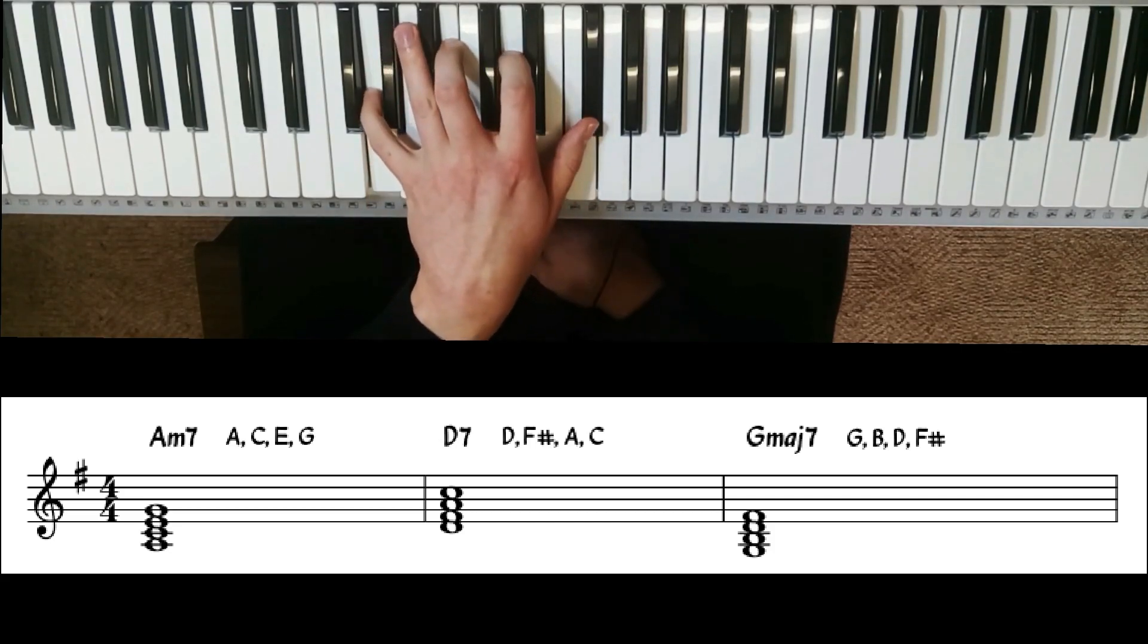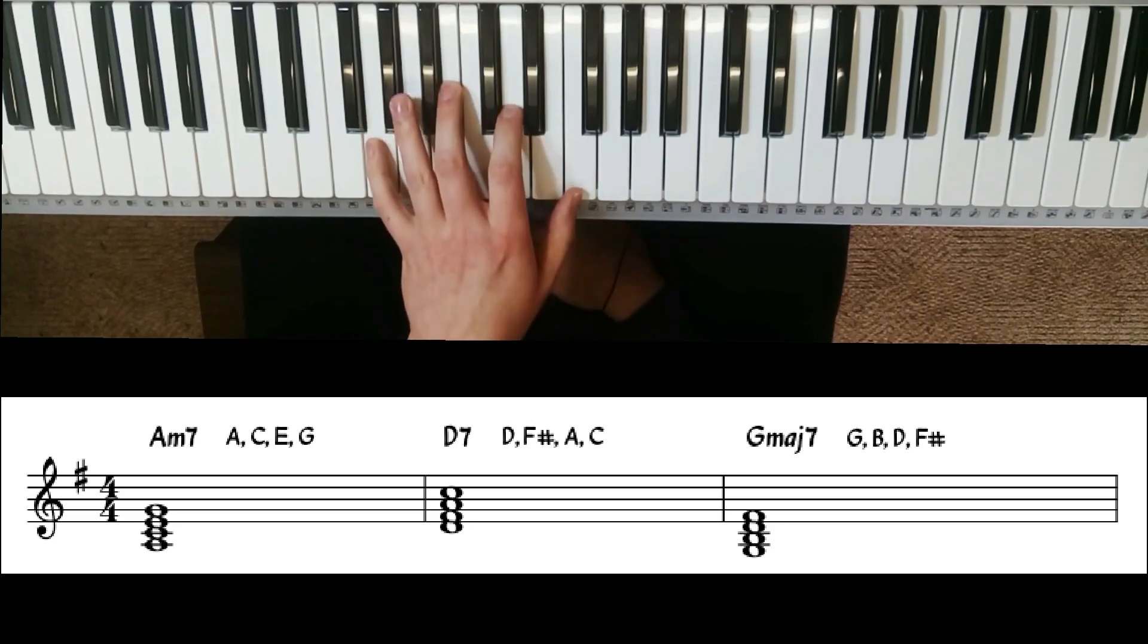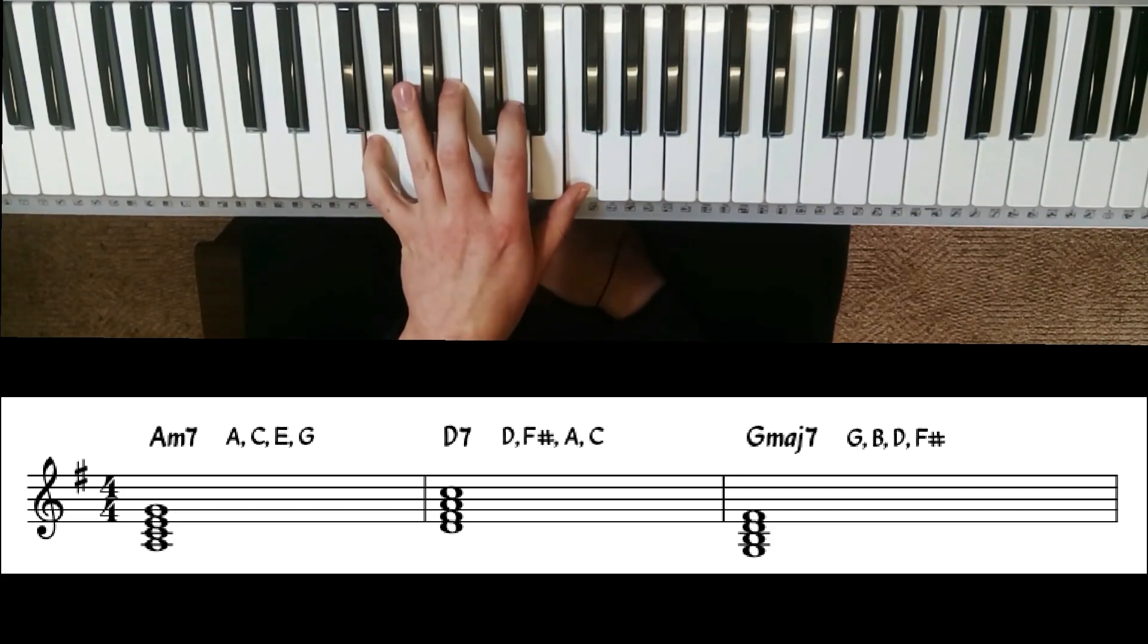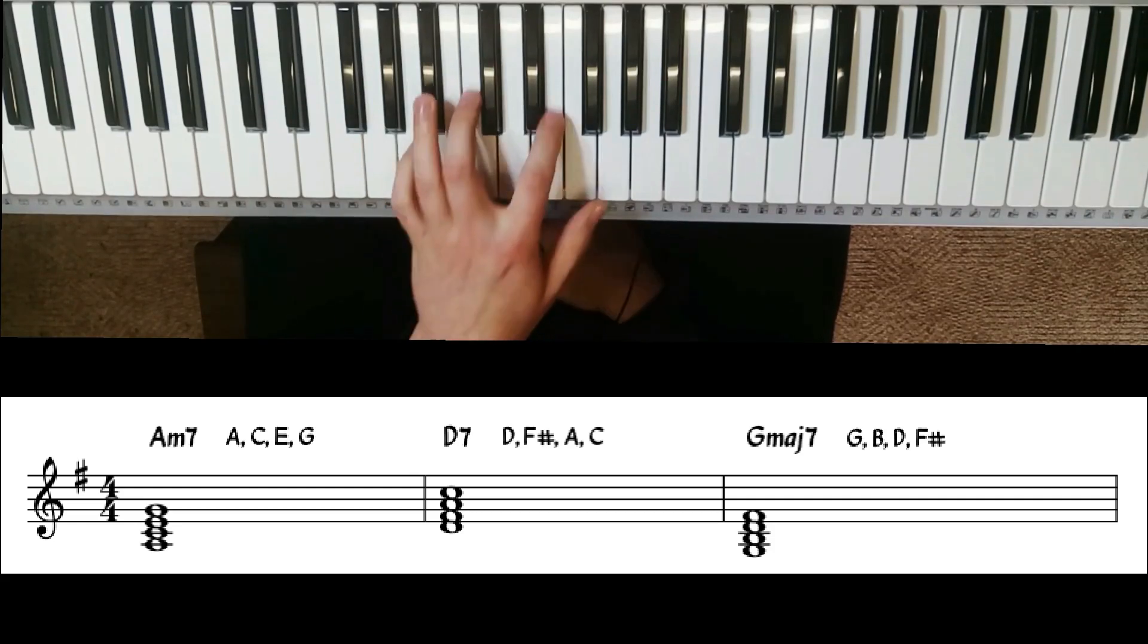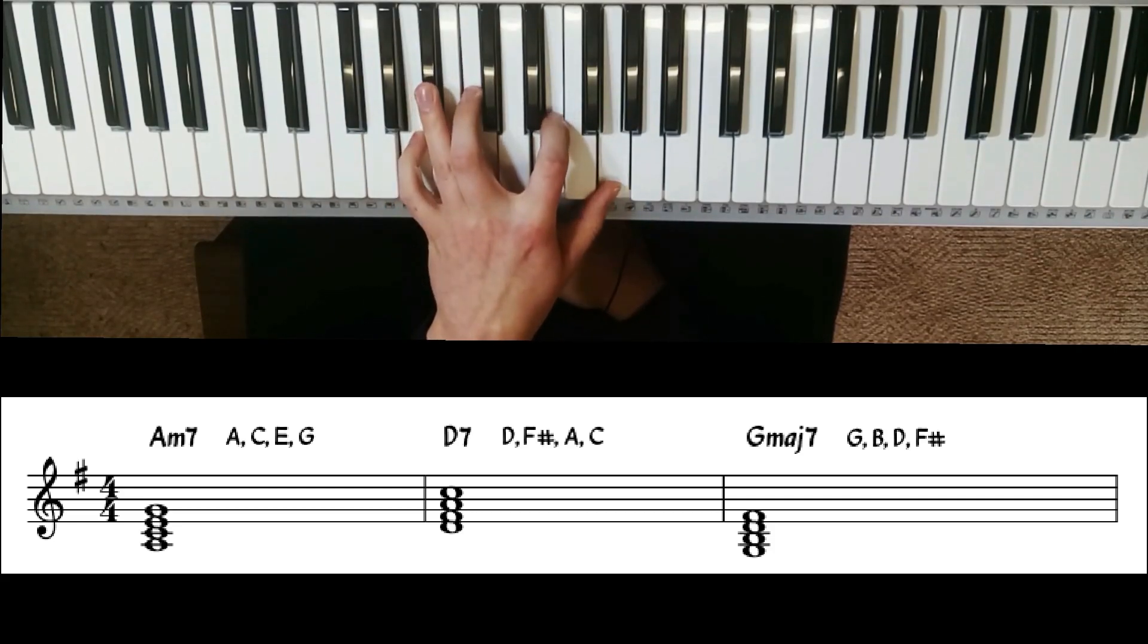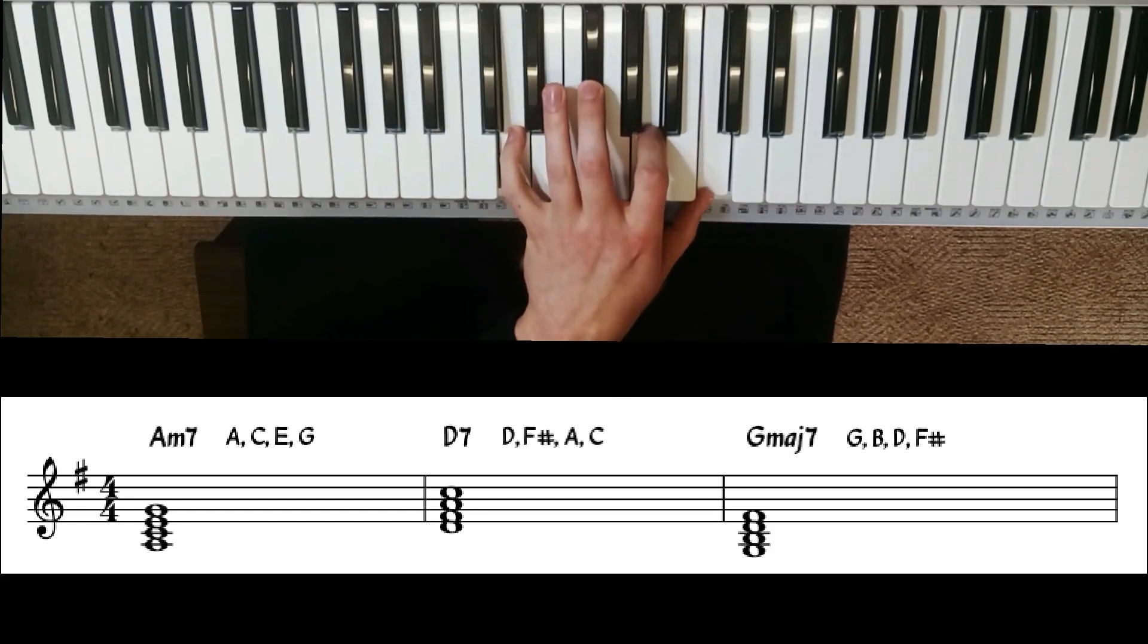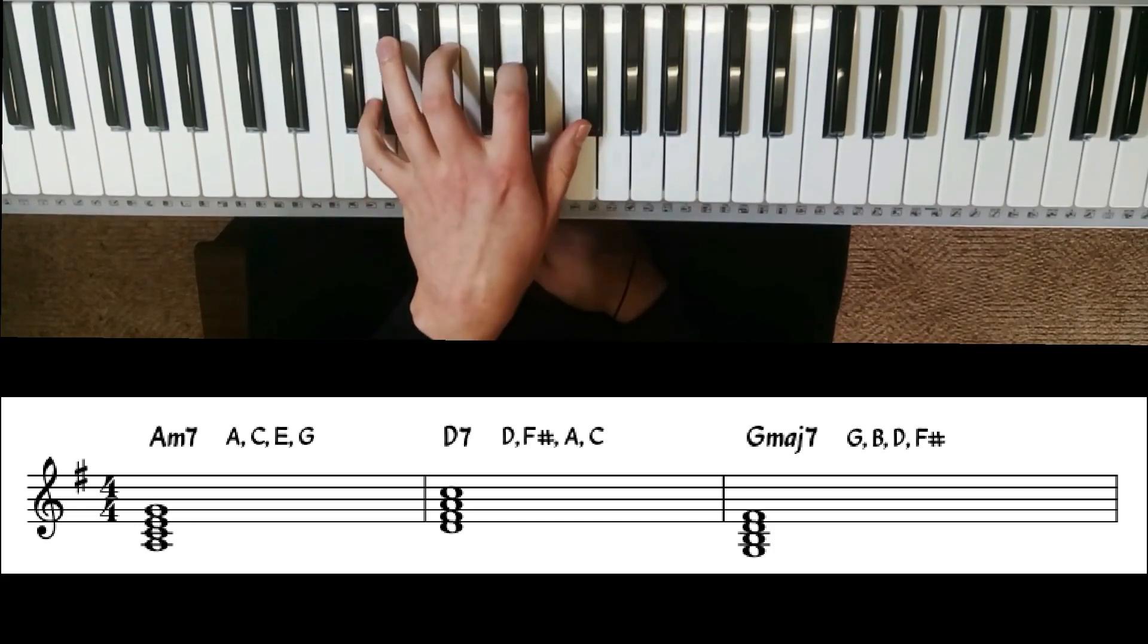In the first lesson, our 5 chord was G7, which had F natural, but we want G major 7 here, so we make it F sharp as per the key. Just to run those over again: A minor 7 is A, C, E, and G. D7 is D, F sharp, A, and C. And G major 7 is G, B, D, and F sharp.